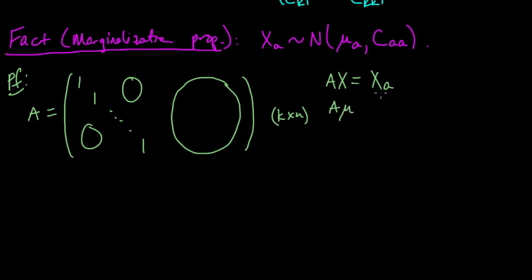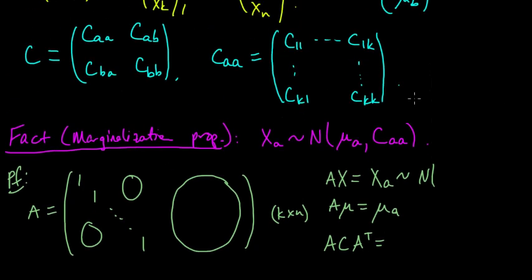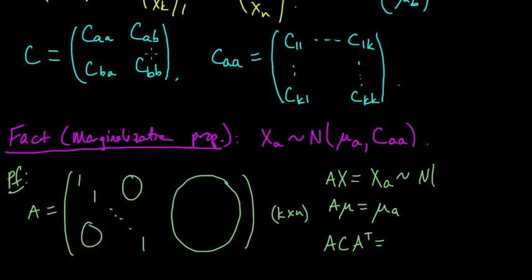And similarly, by the affine property, it has normal distribution with mean Amu and that's mu A by the same reasoning here. It's just projecting onto the first K coordinates. And it has covariance ACA transpose. So this is C. We decomposed ACA transpose. If you know your linear algebra, you might be able to read it off very quickly. It turns out that this just picks off that upper left K by K block. So it's just CAA.